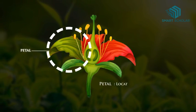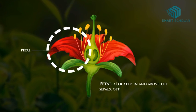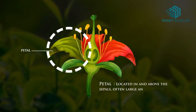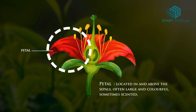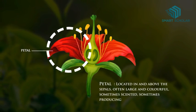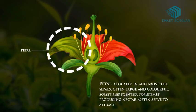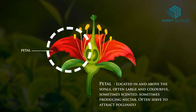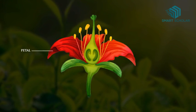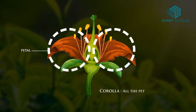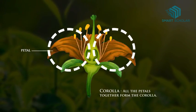Petal: located in and above the sepals, often large and colorful, sometimes scented, sometimes producing nectar, and often serving to attract pollinators to the plant. Corolla: all the petals together form the corolla.